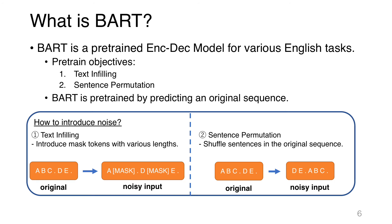BART is pre-trained by predicting the original sequence given a masked and shuffled sequence, for English. The noisy input for pre-training is created in two ways: text infilling and sentence permutation. Text infilling introduces mask tokens with various lengths. Sentence permutation shuffles sentences in the original sequence — for example, swapping the first and second sentences. BART is pre-trained by reconstructing the original sequence from these noisy inputs.